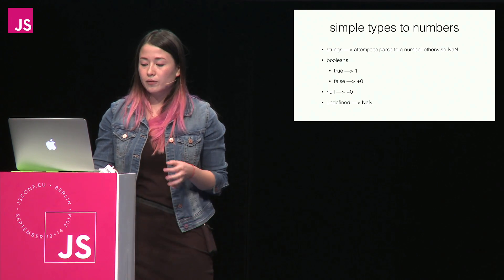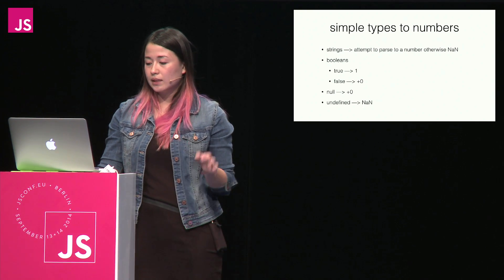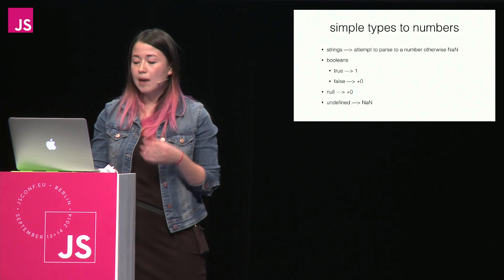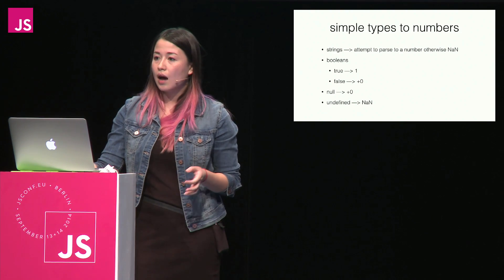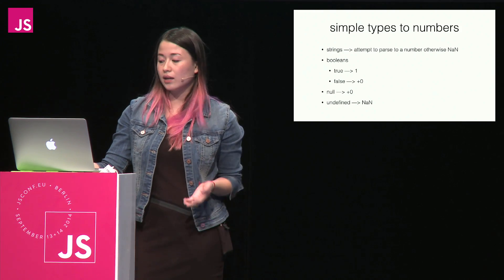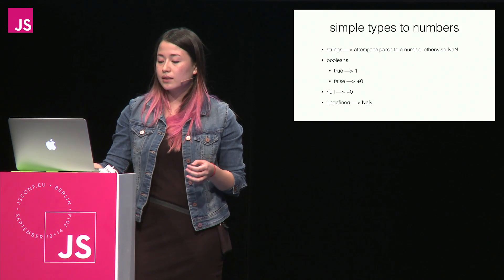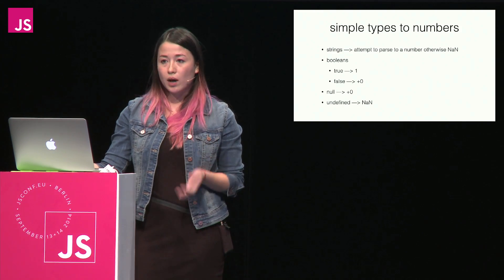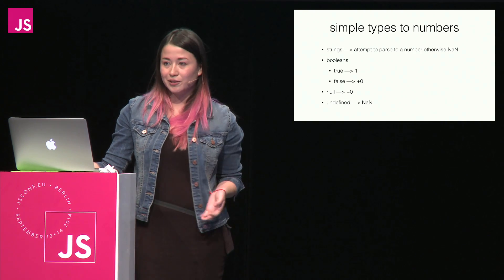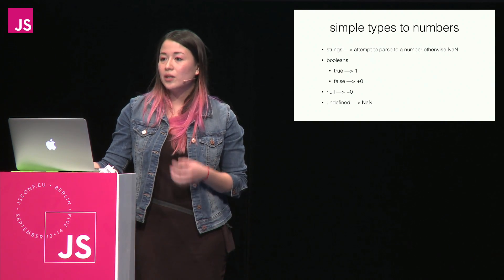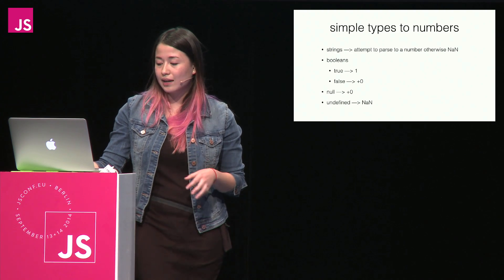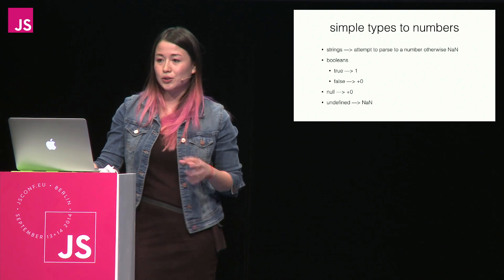So how does JavaScript convert from simple types to numbers? For strings, there's an attempt to parse the string to a number; otherwise it returns NaN, or Not a Number. For Booleans, true is converted to one, false is converted to zero (positive zero). Null is also converted to positive zero, and undefined is converted to Not a Number.